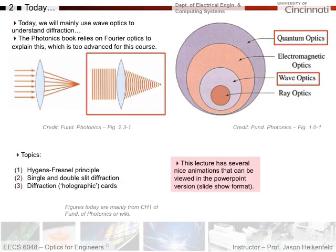Today we will mainly use wave optics to understand diffraction. The Photonics book uses Fourier optics to explain this, which is way too advanced for this course — it's very powerful, but beyond what I want you to delve into. We're going to focus on the Huygens-Fresnel principle, single and double-slit diffraction, and then talk about some holographic cards as well. This lecture has nice animations; if you open the PowerPoint version in slideshow mode, you'll be able to see the animated GIFs.